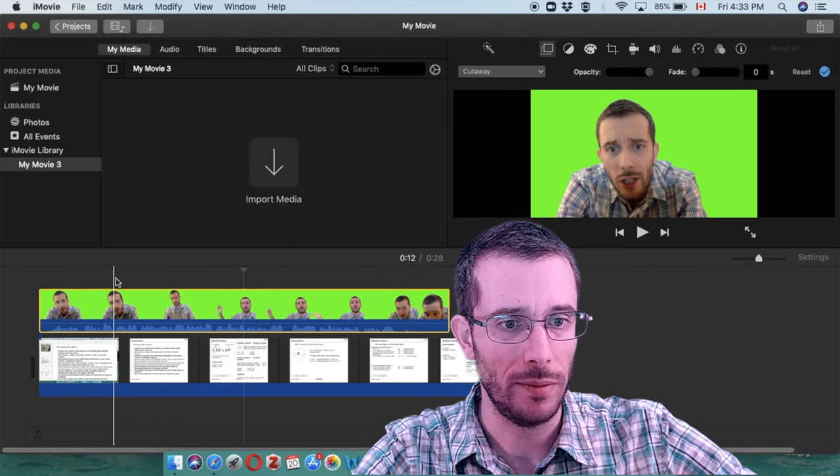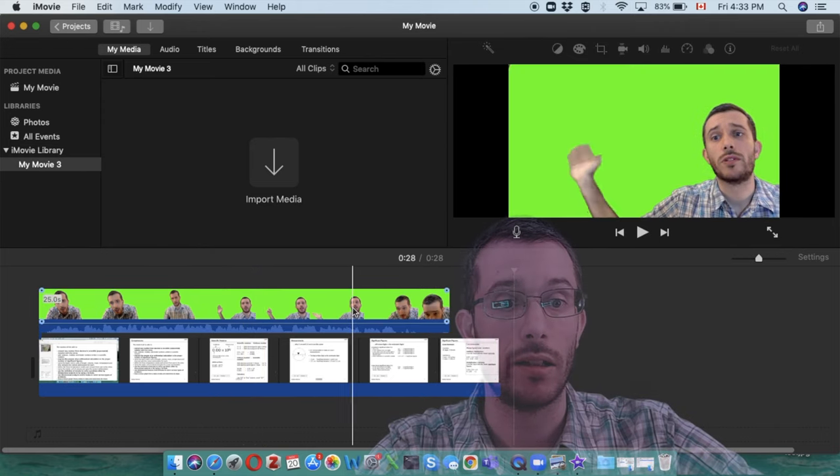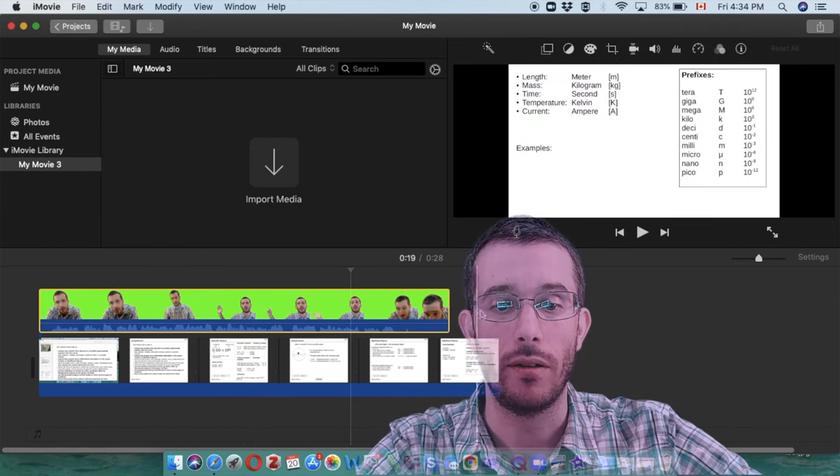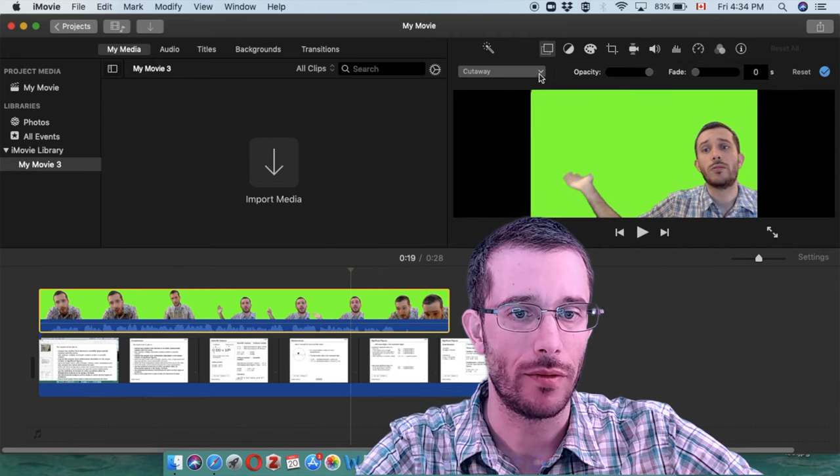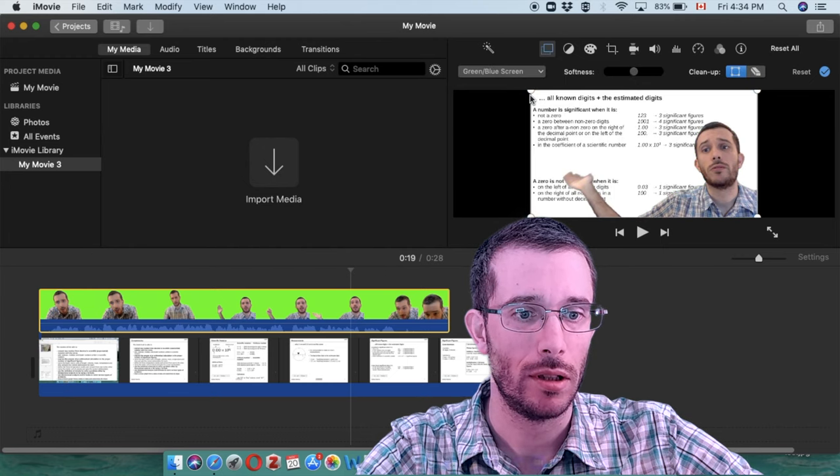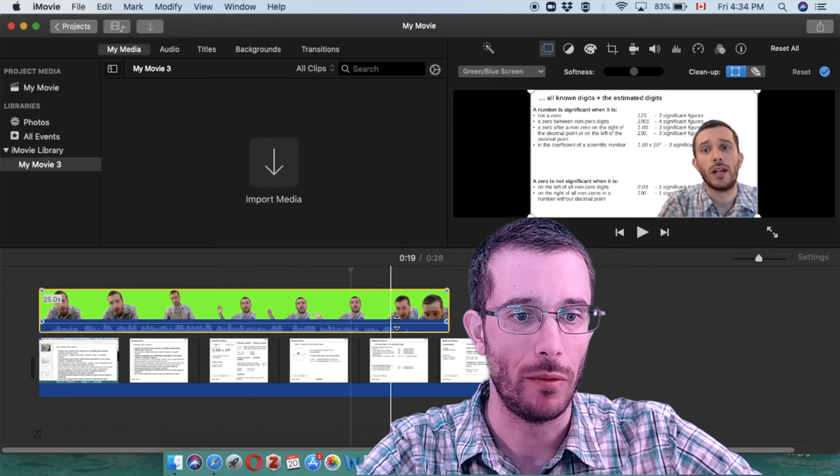Here is my green screen video. I click on the video so it's yellow highlighted, and then I go here, and instead of cutaway, I say green blue screen, and magically the whole thing already worked.